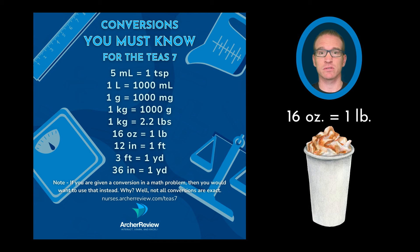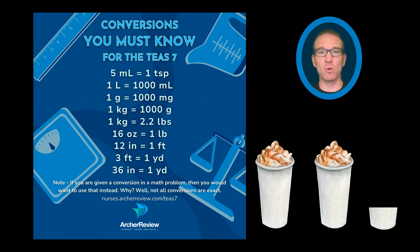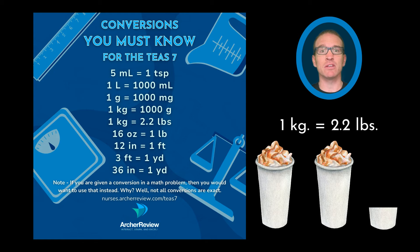Imagine going to Starbucks. That 16-ounce cup of coffee is one pound. Now imagine double-fisting: two of those would be two pounds, and a little bit more than that would be a kilogram. One kilogram is 2.2 pounds.